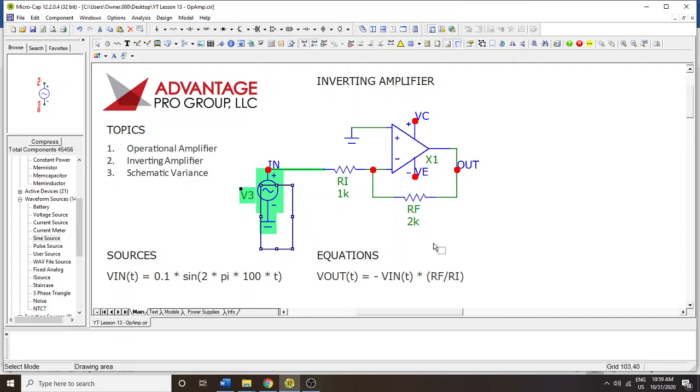So 2k divided by 1k is going to be 2. So we can expect that the output voltage is going to be twice as large as the input voltage with a sign change, or 180 degree phase change.